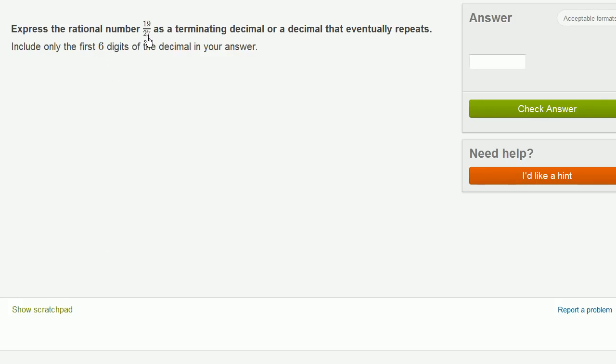Express the rational number 19 over 27, or 19 27ths, as a terminating decimal or a decimal that eventually repeats. Include only the first six digits of the decimal in your answer.